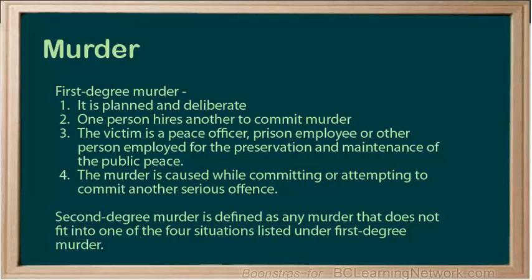First degree murder includes a killing that falls into any one of the following situations: it is planned and deliberate; one person hires another to commit murder; the victim is a peace officer, prison employee, or other person employed for the preservation and maintenance of public peace; or the murder is caused while committing or attempting to commit another serious offence.